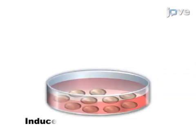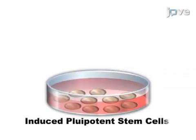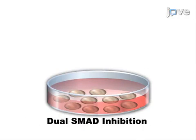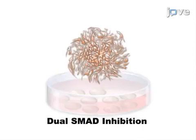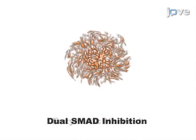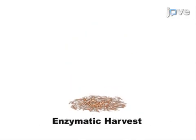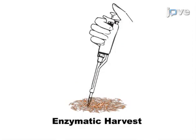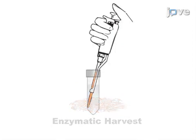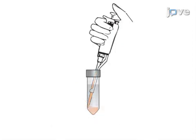This is accomplished by first differentiating hiPSCs using dual SMAD inhibitors into neural rosettes. The second step is to harvest these neural rosettes and allow them to grow into expandable NPC populations.